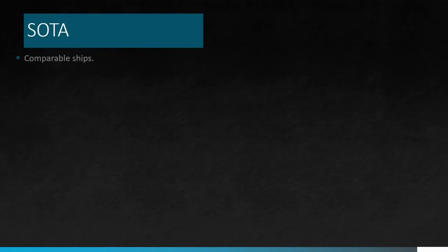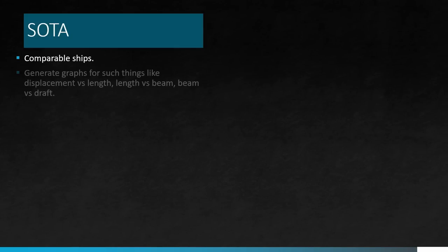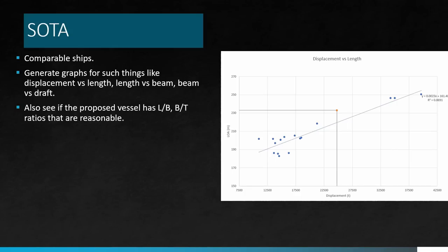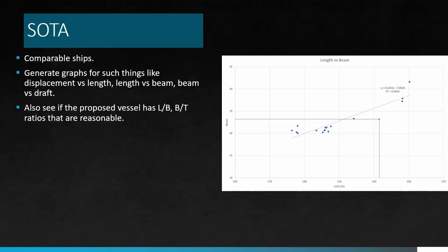With that 25,000-ton displacement in mind, let's look at the vessel's principal particulars. You use something called a state-of-the-art analysis — comparing to similar vessels and creating graphs: displacement versus length, length versus beam, beam versus draft. From those graphs for displacement versus length, you'll see that for her displacement, the Petropavlovsk has been made a little bit longer, because she goes away from the trend line. There are other vessels also away from the trend line, but she's just a little bit further away than most. On length versus beam, for the length depicted in-game, she doesn't seem to have sufficient beam.